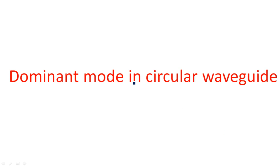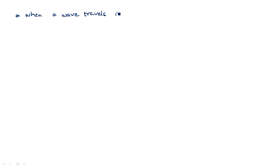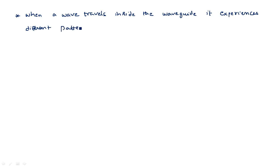In this video, let us learn about dominant mode in the circular waveguide. When a wave travels inside a circular waveguide, a rectangular waveguide, or any type of waveguide, it travels in different patterns. These patterns are known as modes.